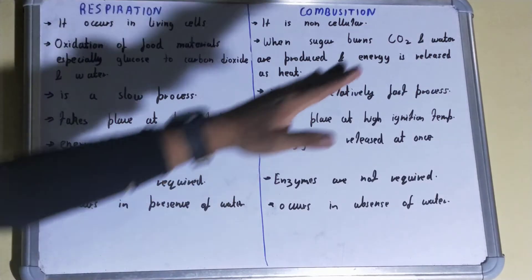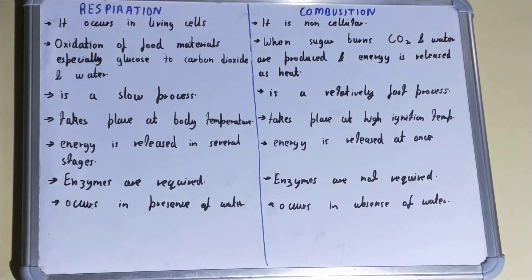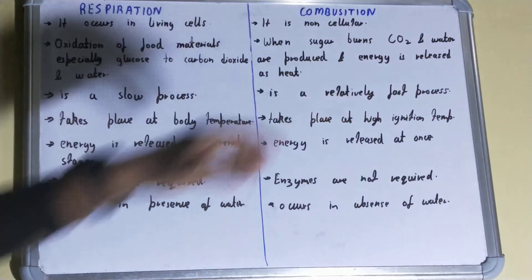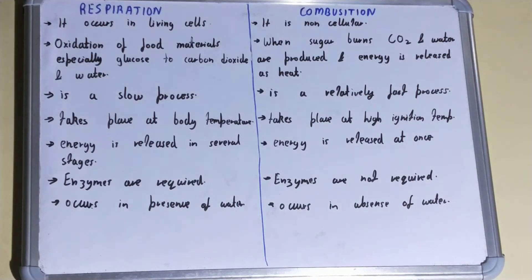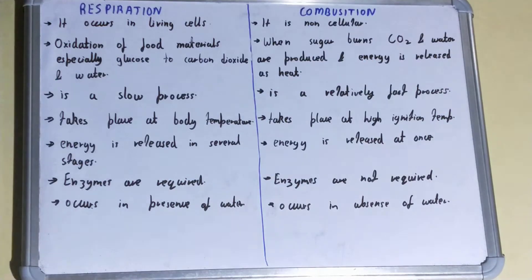In combustion, when sugar burns, CO2 and water are produced and energy is also released in the form of heat. So in combustion, the sugar is heated or burned, and upon burning it releases CO2 and water and also some energy in the form of heat.